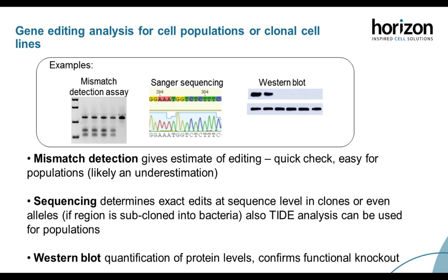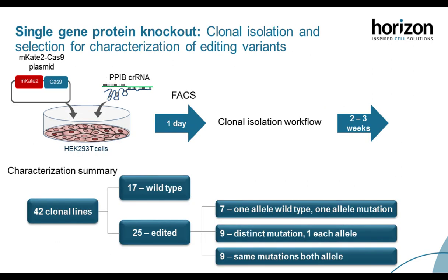After creating your gene-edited population or clonal cell line, you will need to analyze and characterize the edits. Mismatch detection is a simple PCR-based assay that gives an estimation of indel formation—a quick way to assess editing, though likely an underestimation. Sanger sequencing allows determination of the exact edit at the sequence level, and Western blotting is a nice confirmation of the intended protein knockout.